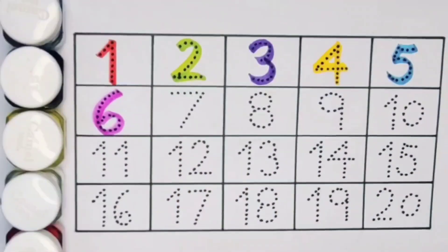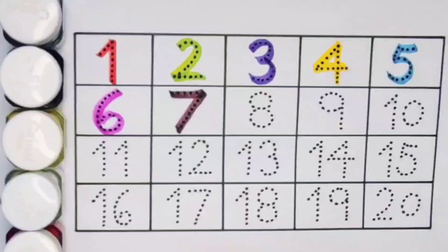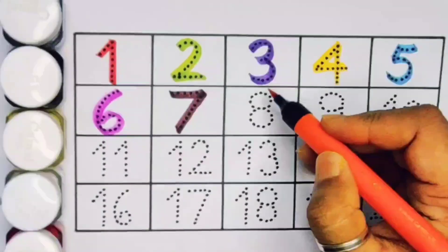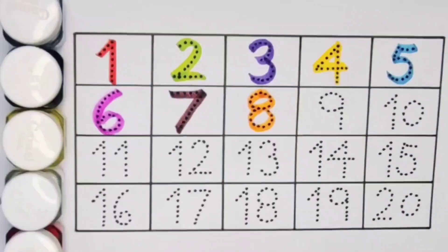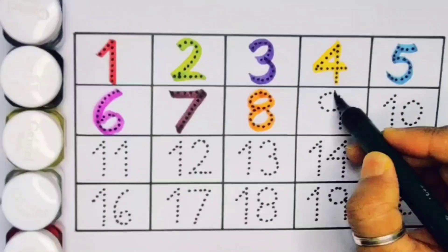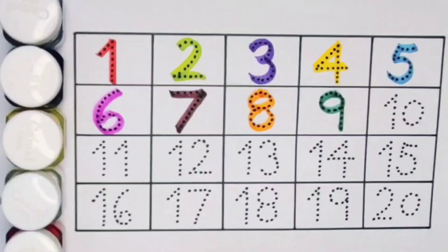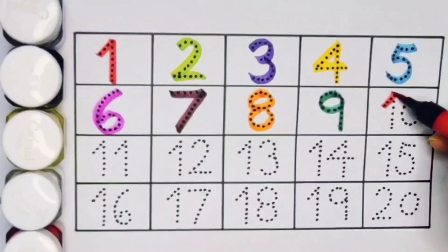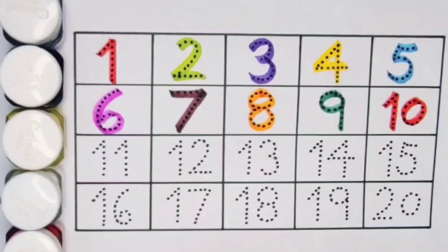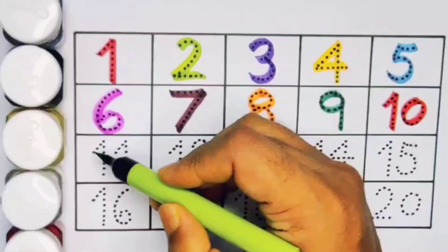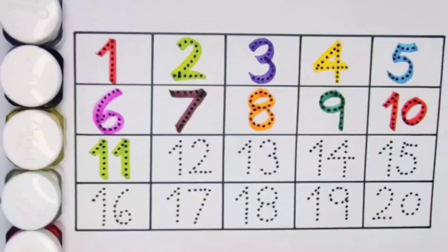Next kids 7, number 7. Next 8, number 8. Next kids 9, number 9. Next kids 10, 1, 0, 10. Number 10. Next kids 11, 1, 1, 11. Number 11.